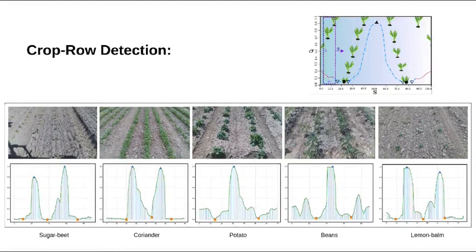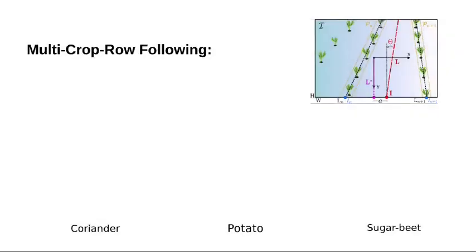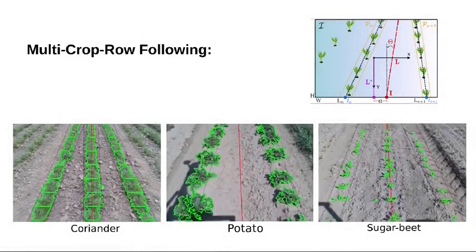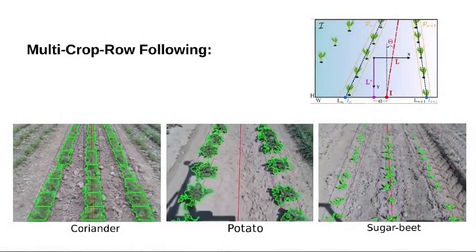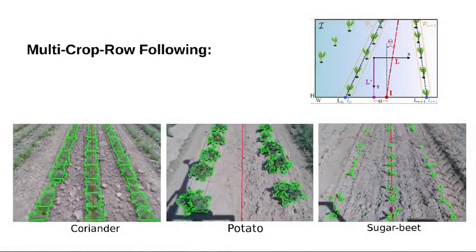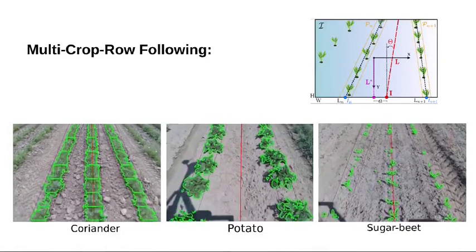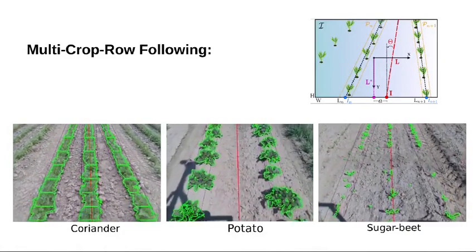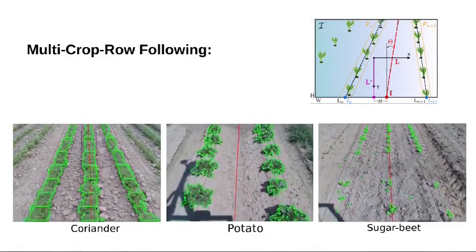We extract repetitive patterns of crop rows using a novel sliding window and moving variance technique. Using visual surveying and our robust vegetation segmentation, we are able to guide the robot through the lanes of crops with different canopy types and different stages of growth accurately.